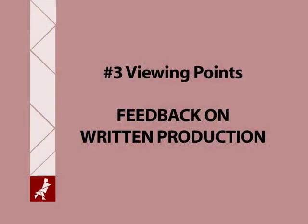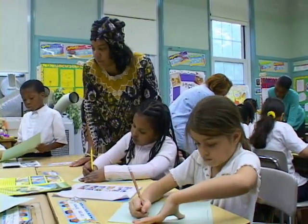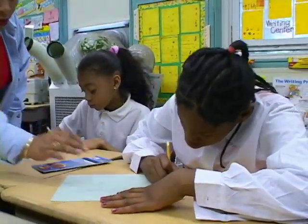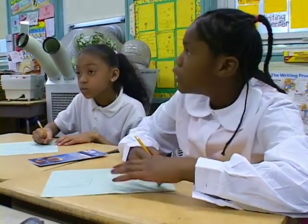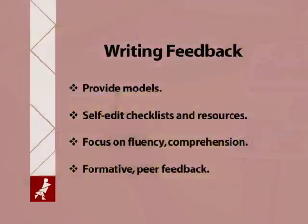Number 3 — Viewing Points: Feedback on Written Production. As with oral production, there are many purposes for writing — for example, stating a point of view, telling or retelling a story, synthesizing information, applying for a job, making a request, planning for the future, writing a letter, and so on. A teacher can support the writing process by providing models, making available student self-edit checklists and resources, focusing first on fluency and overall comprehension instead of mechanical mistakes, and allowing time for students to self-correct and receive formative and peer feedback along the way.